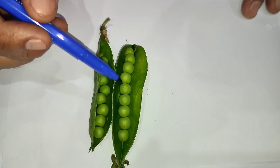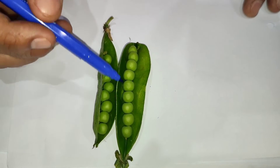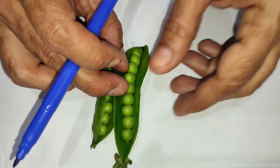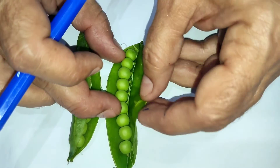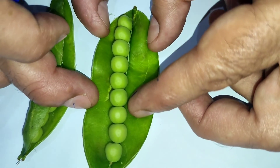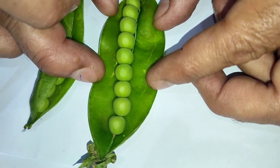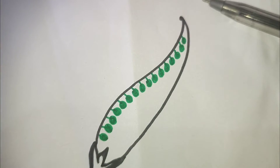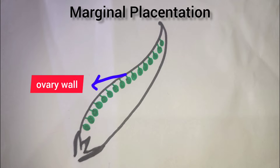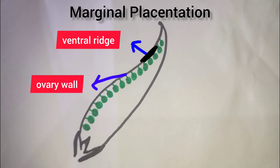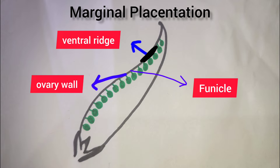Another type is marginal placentation. For example, pea and family Fabaceae or Leguminaceae, where the placenta forms a ridge along the ventral suture and the ovules are produced in rows. In the diagram of marginal placentation in pea, the ovules are produced at the ventral ridge or margin of the ovary wall. The stalk of the ovule is the funicle.